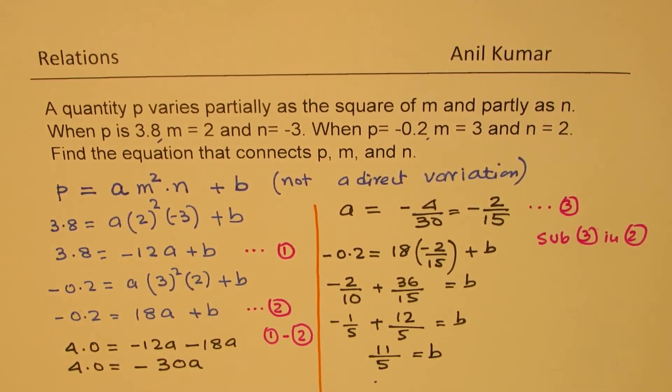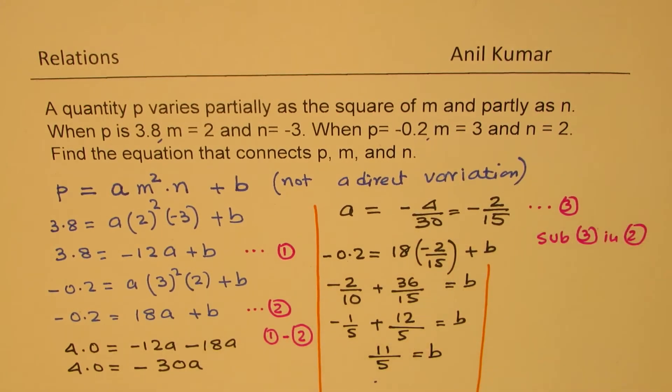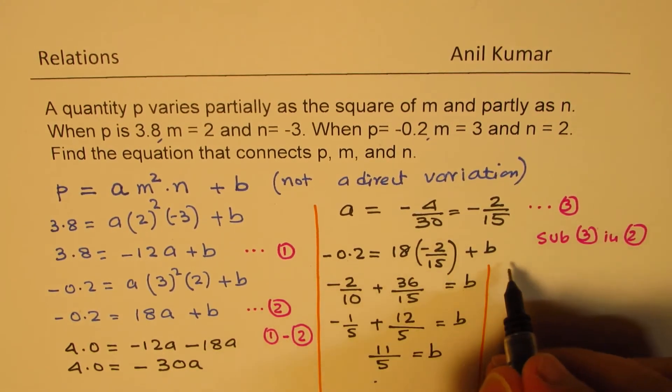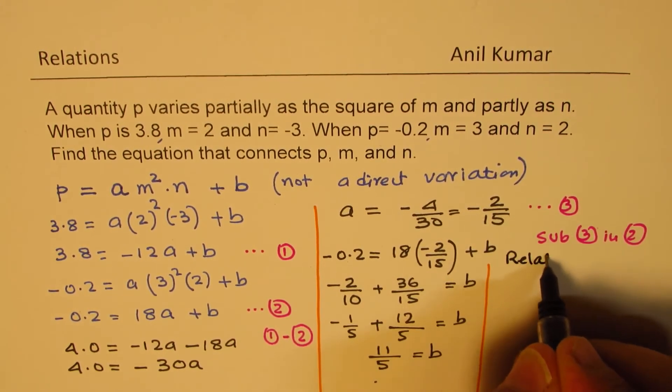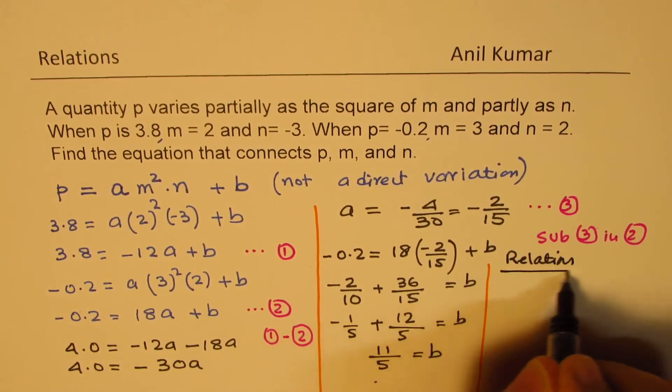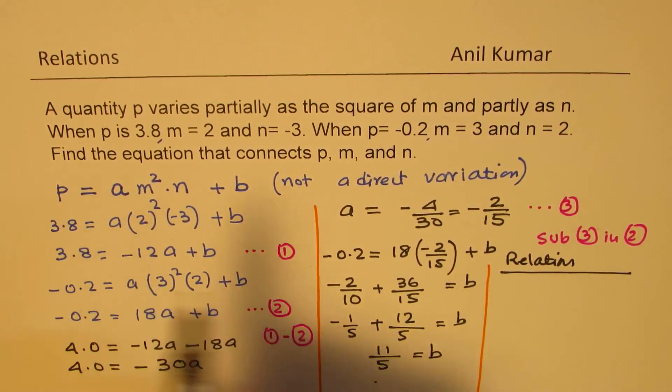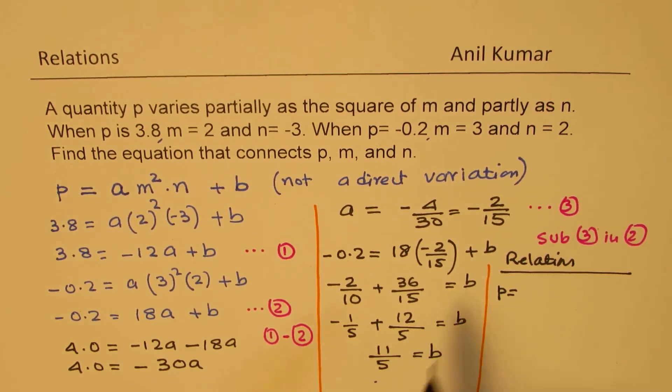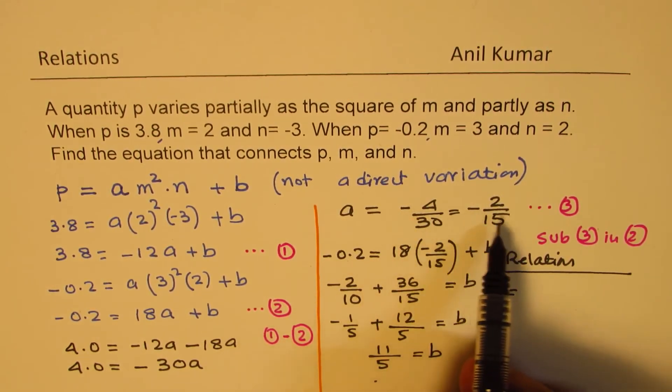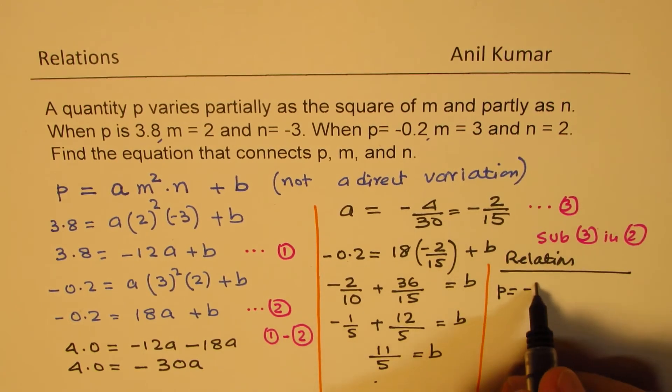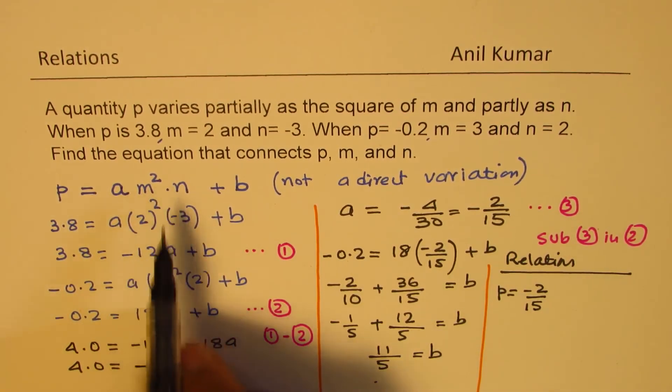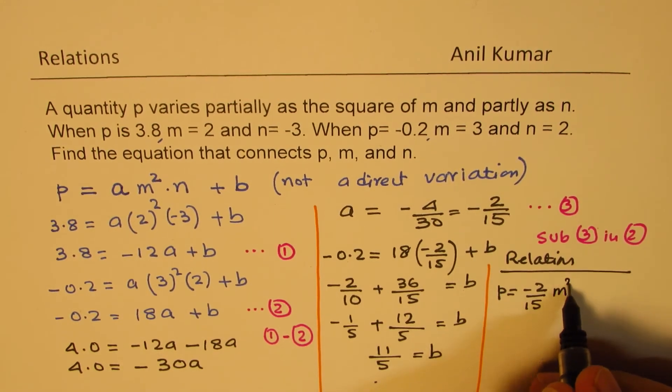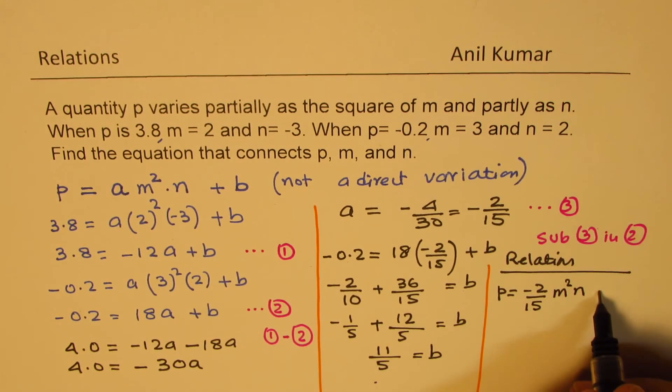So we have both the values now, and we can write down the relation. So the relation is P equals to A is minus 2 over 15, M squared N, and B is 11 over 5.